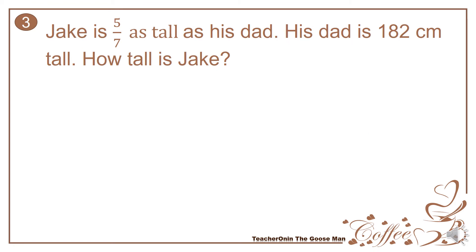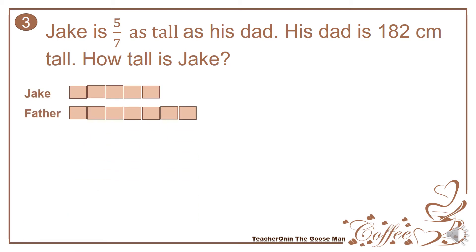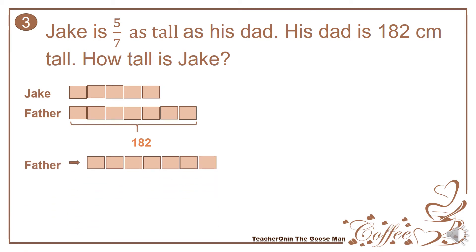Let's have another example. Jake is 5 over 7 as tall as his dad. His dad is 182 centimeters tall. How tall is Jake? We will represent the height of Jake as 5 parts, while for his father he is 7 parts. The height of his father is 182 centimeters, so the father has 7 parts — 7 equal parts which is equal to 182.